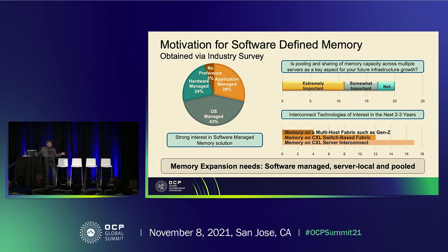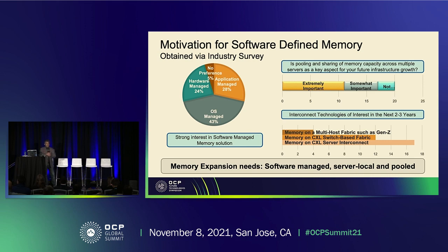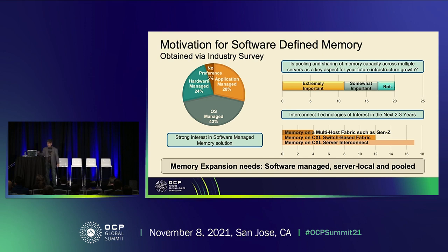The second survey had about 20 questions. One key point was asking: do you want one solution with specific targeted capacities and capabilities, or do you want control through software? There was an overwhelming response that they want software control — whether going through the kernel or whether applications themselves decide how to use memory. There was a strong response saying they want control through software, showing a clear requirement from the software definition perspective.